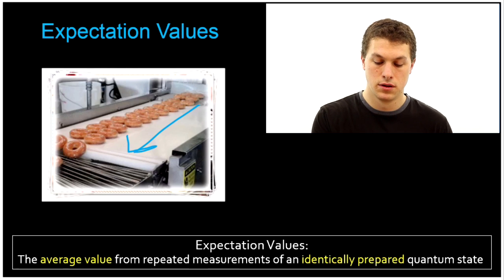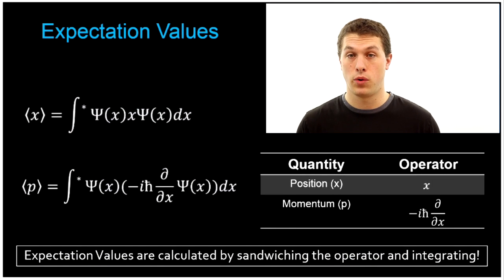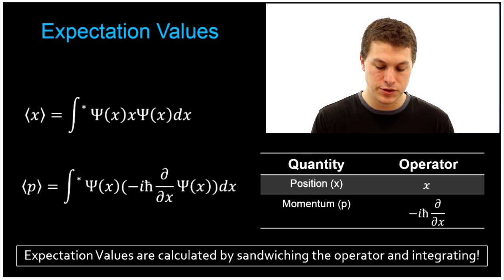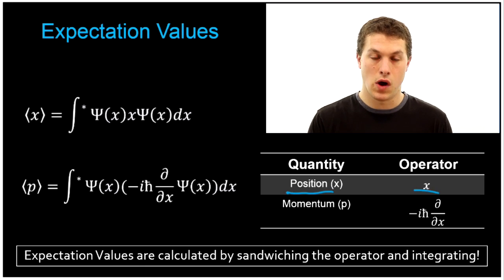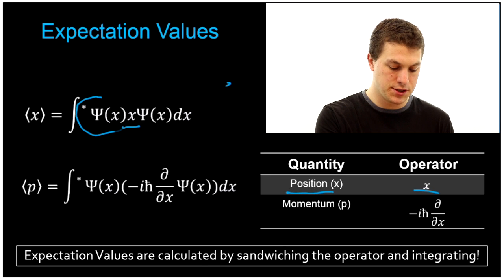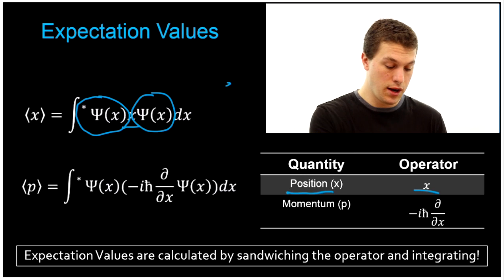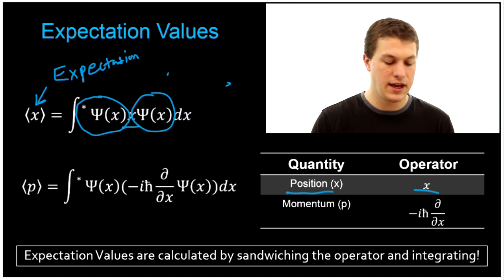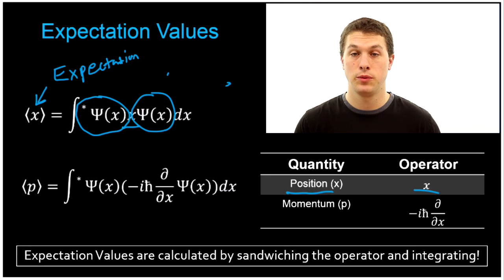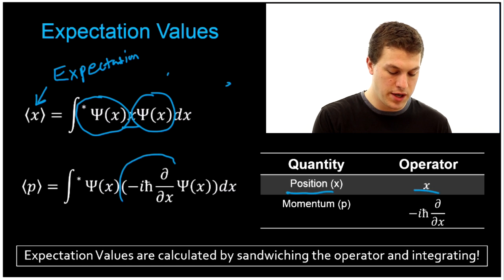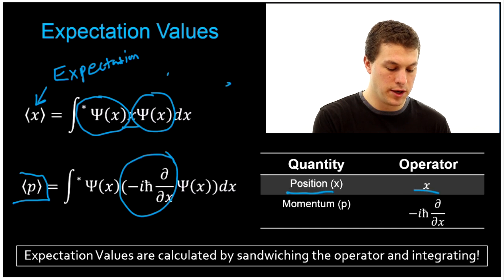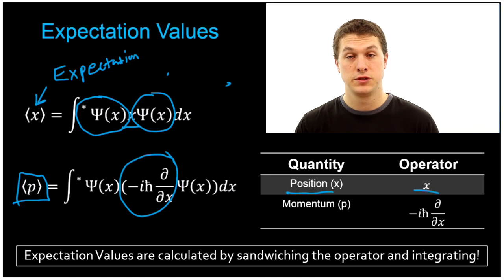How do we calculate expectation values? All we do is take the operator for the quantity we're interested in and sandwich it between our wave functions. The operator for position is x, so I take x and sandwich it between my complex conjugate and my original wave function, then integrate — that gives the expectation value. I can calculate any expectation value if I have the operator: sandwich it between the complex conjugate and the original wave function and integrate. Down here you see the operator for momentum sandwiched between the same two wave functions; integrate, and you get your expectation value for momentum.